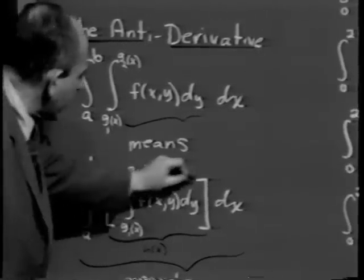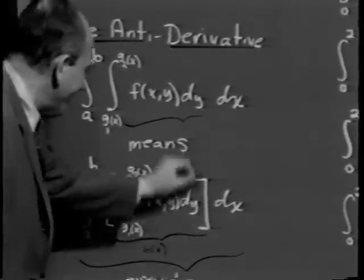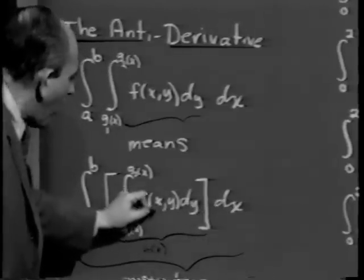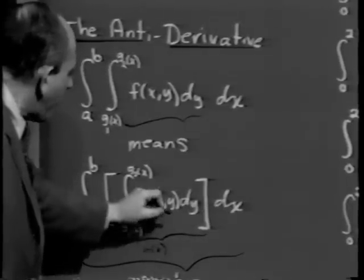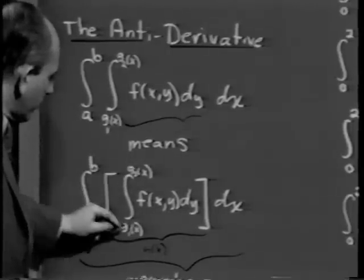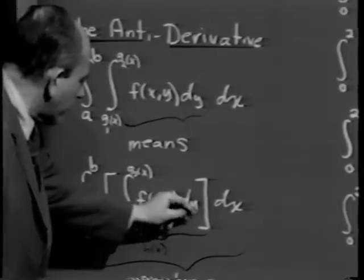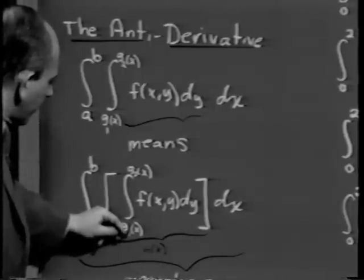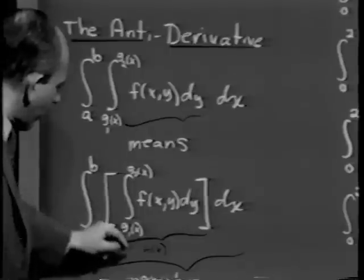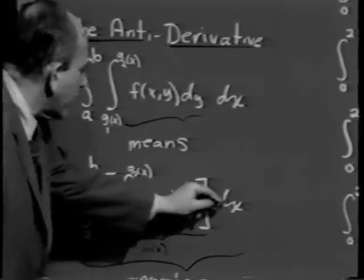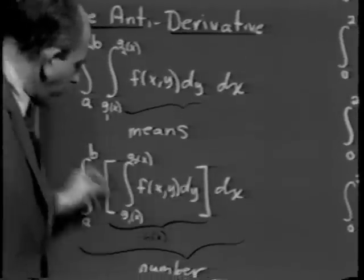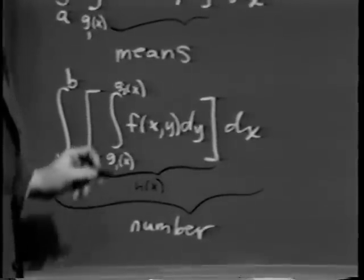Let's put some brackets in. For a fixed value of x, hold x constant, and compute f(x,y) dy from g₁(x) to g₂(x). That's a function. Remember that you're going to integrate with respect to y. When you're all through, because the limits involve only x, the integrand you get in this bracketed expression will now be a function of x alone — call it h(x). Integrate h(x) dx between a and b. The resulting expression, assuming you can carry out the integration, will be a particular number.